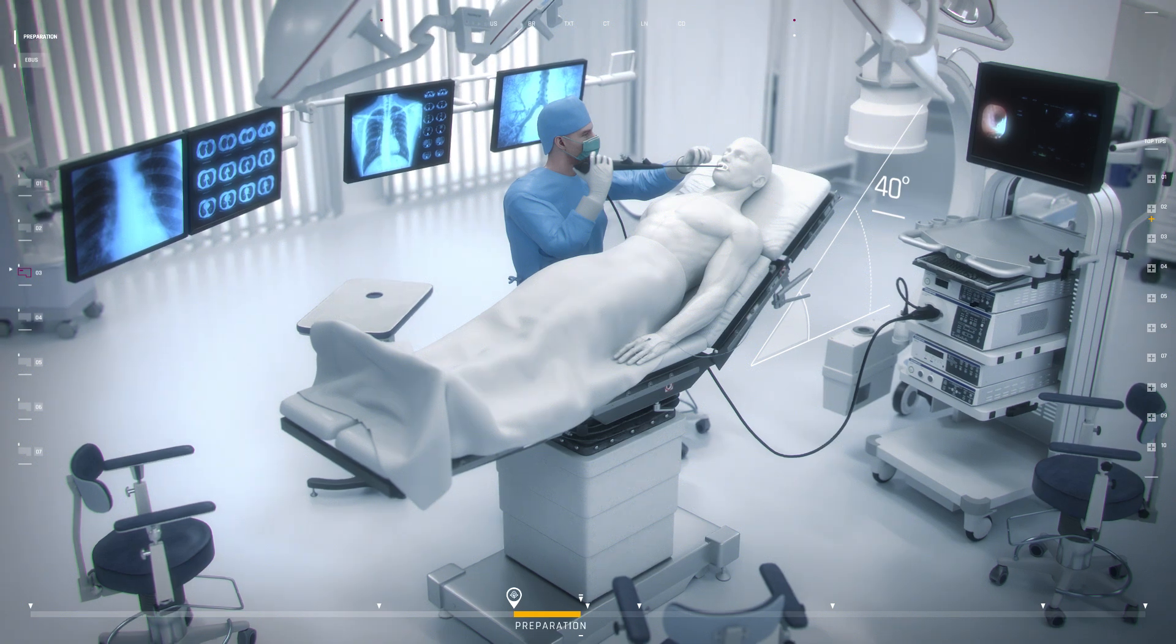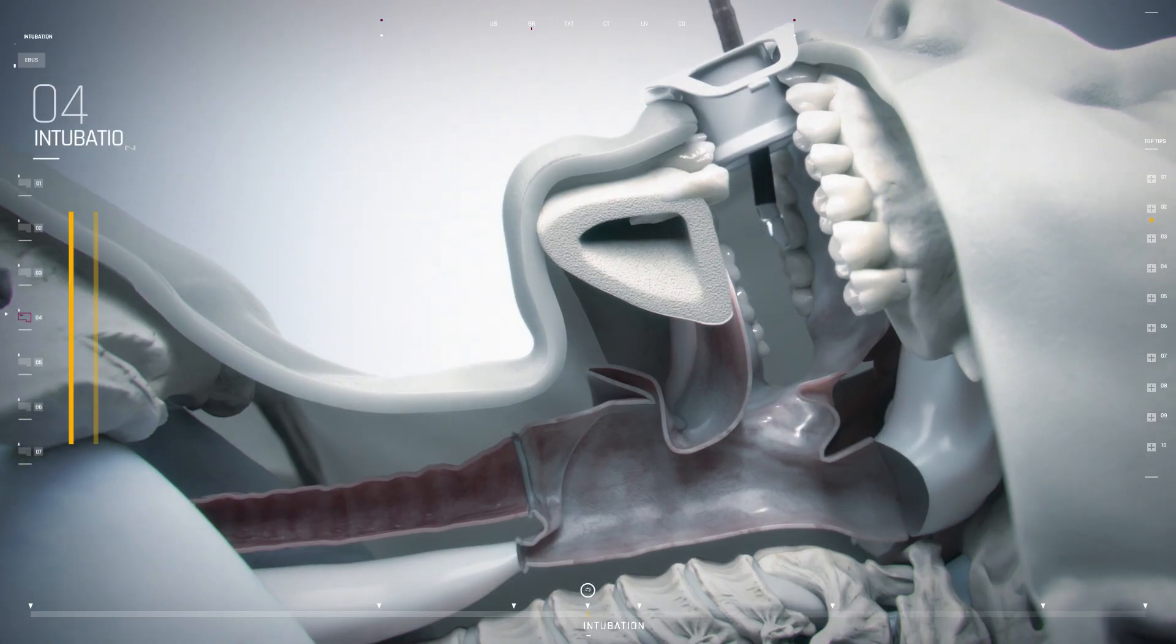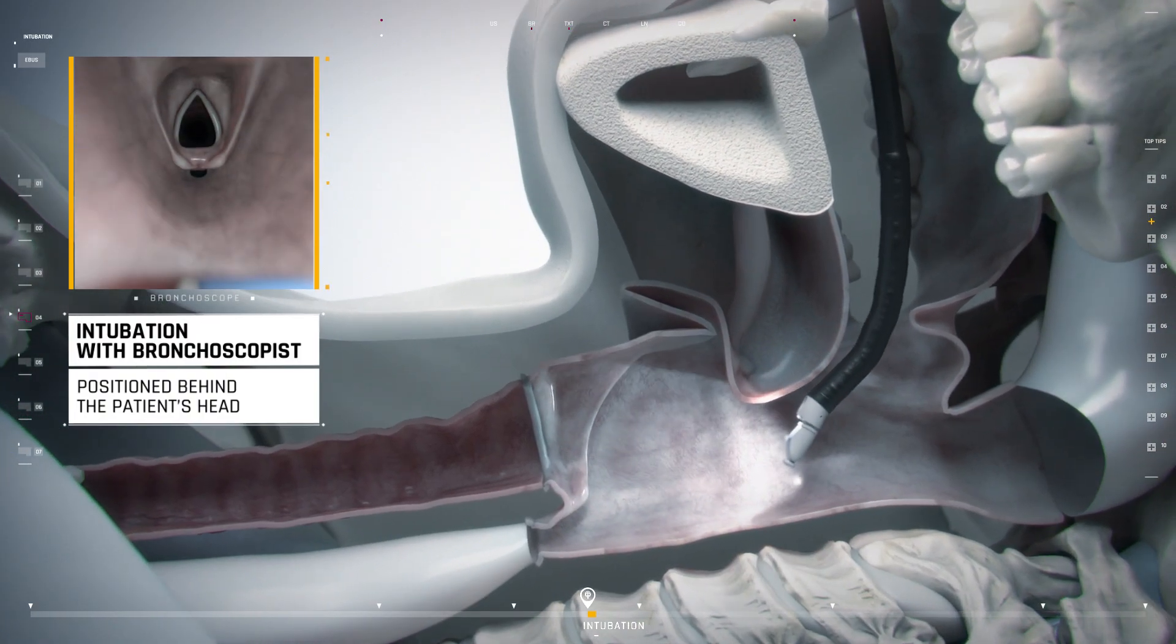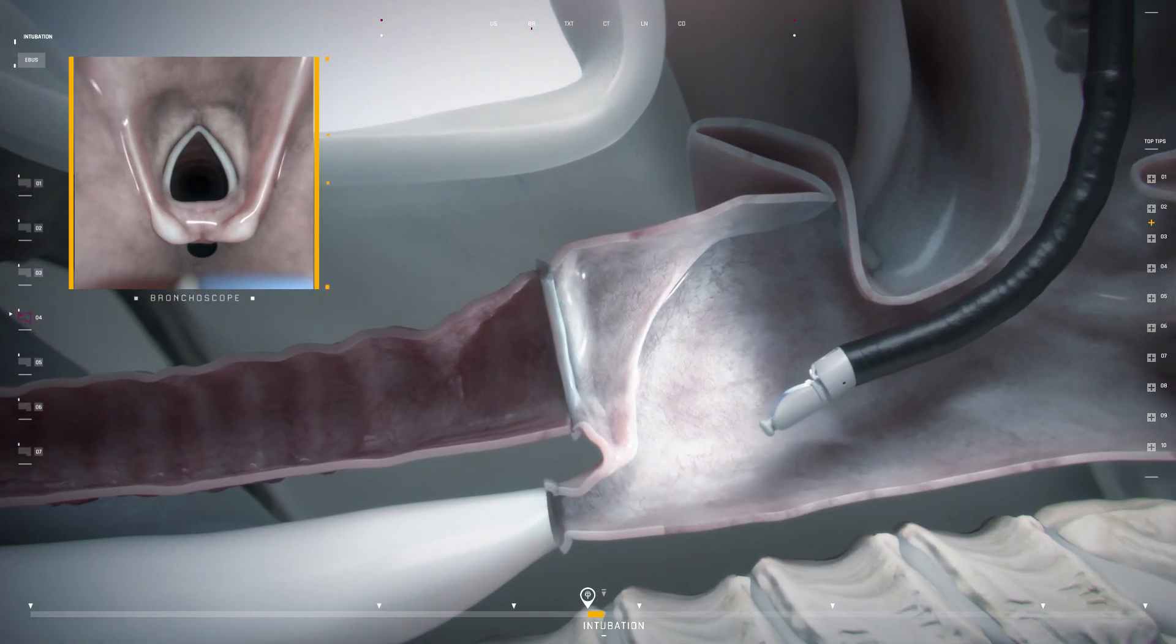The procedure can be performed facing the patient or standing behind the patient's head. Care is needed when intubating the trachea. Often only the anterior apex of the vocal cords is visible as the scope enters the subglottic space.